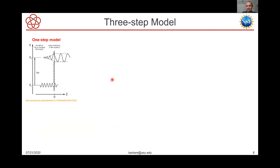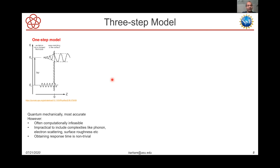The one-step model I just described is fully quantum mechanical and ideally the most accurate model of photo emission, but it is often computationally infeasible. It is extremely hard to actually calculate these overlap integrals for all possible electron states. Furthermore, if you start including complexities like phonon interactions, electron scattering, or surface roughness, it becomes impractical. Obtaining the response time, which is another important cathode metric, is also very difficult to extract from a one-step model.